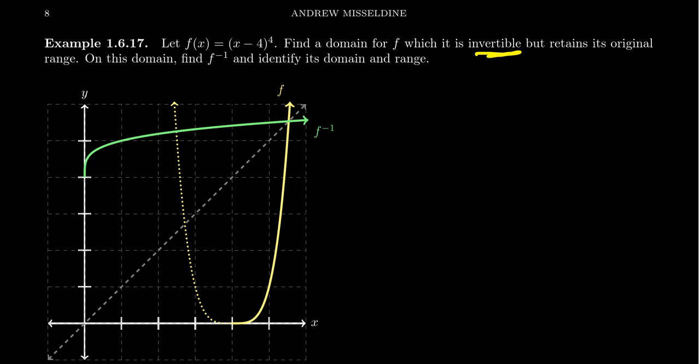We're not able to invert it. But if we shrink the domain, if we remove those parts of the graph that failed the horizontal line test, then we can make it a 1 to 1 function, and therefore there will be an inverse function.